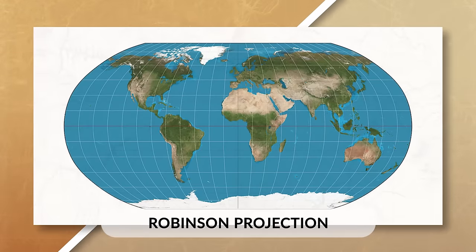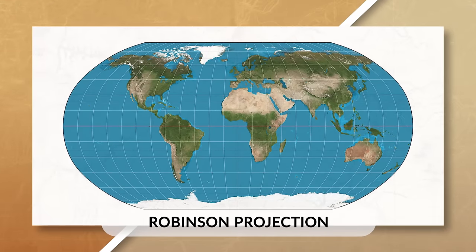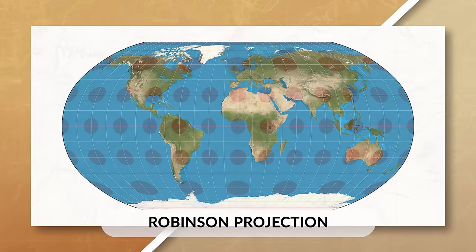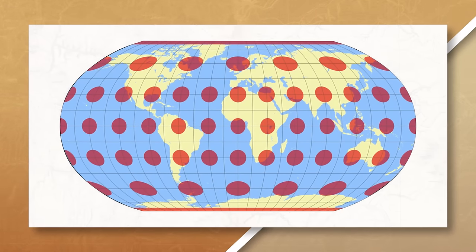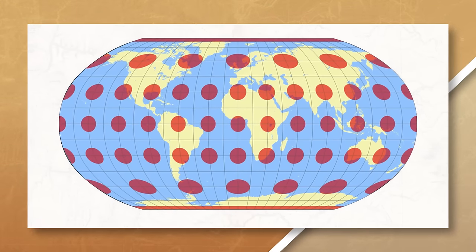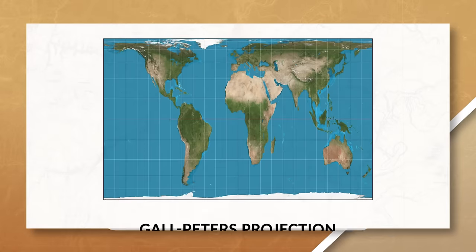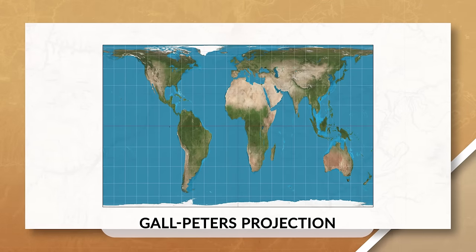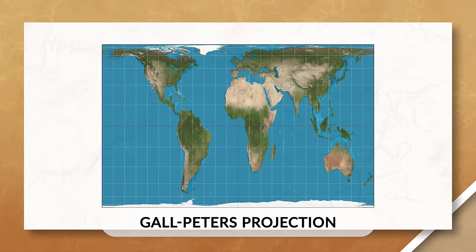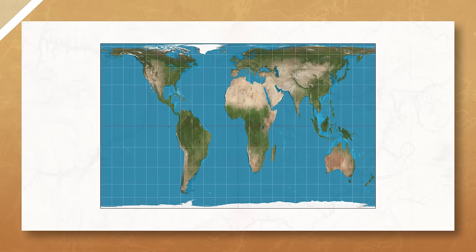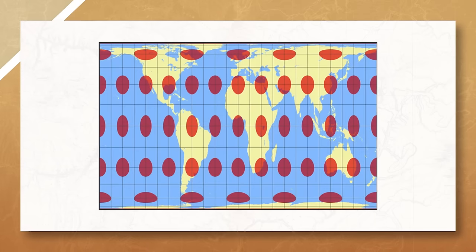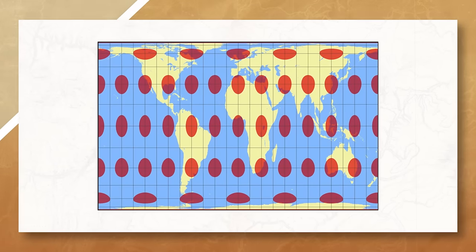The Robinson projection has more distortion near the poles, which helps preserve the size and shape of land masses. But in its effort to minimize distortion, it ends up spreading the distortion out across the entire map for all areas. Next is the Gall-Peters projection, which is one of the more accurate map projections at showing the true size of the Earth's land masses, but does have significant distortion with the shape of land masses and direction. Remember, the fundamental problem that every map has is distortion.